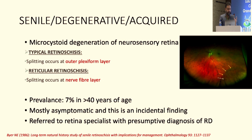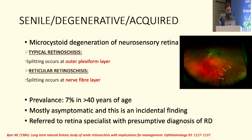Most of this data comes from landmark work by Dr. Bayer, who also told us about whether to laser asymptomatic lattice or not. He followed these patients, and the prevalence is 7% in patients over 40 years of age in Caucasians — much more than that of lattice degeneration, which retina specialists diagnose every single day.